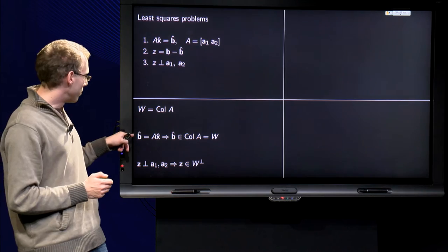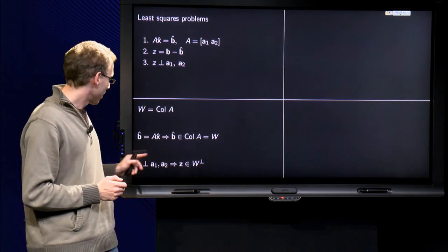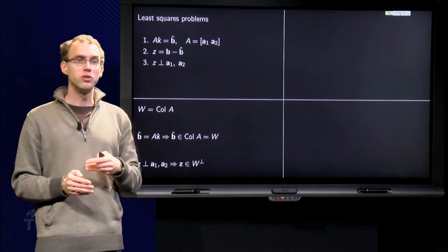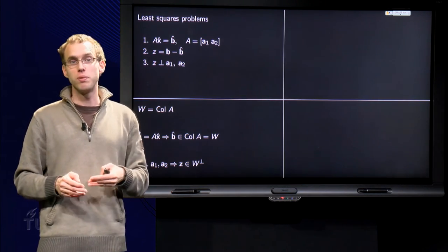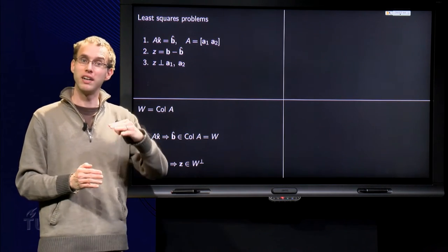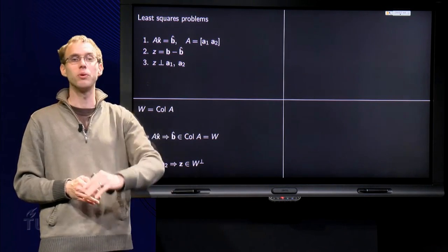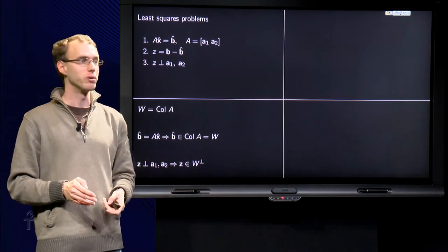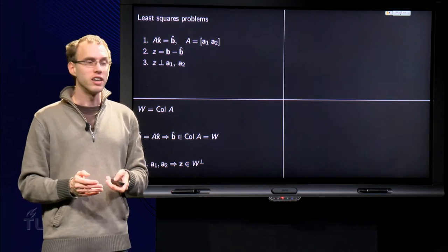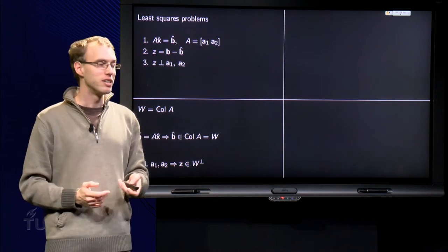So we have B hat in W, z in W perp. We have according to equation 2, B equals B hat plus z, so in this way we decompose our vector B in a vector in W and in a vector z orthogonal to W. So if we have those three restrictions, we have our decomposition.